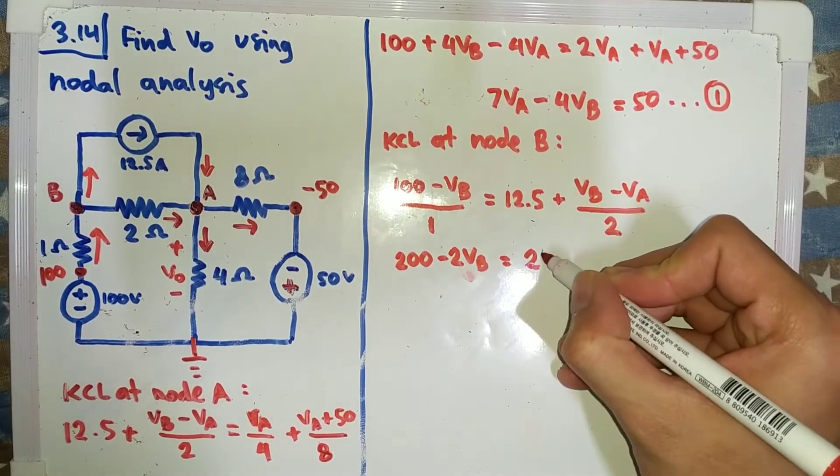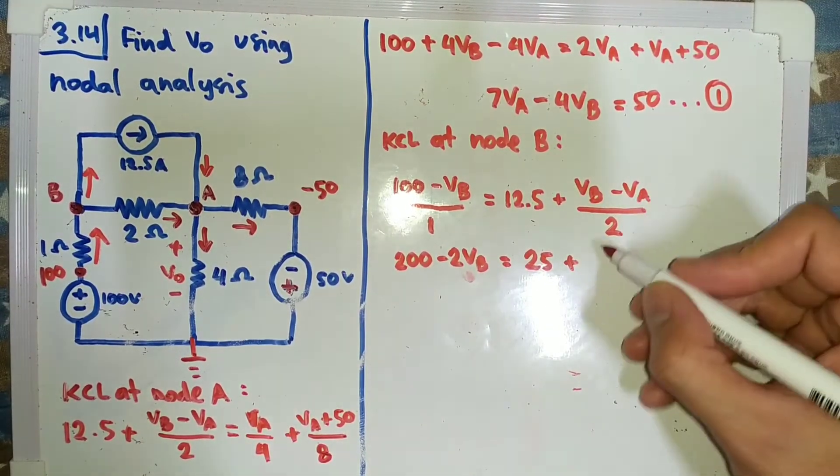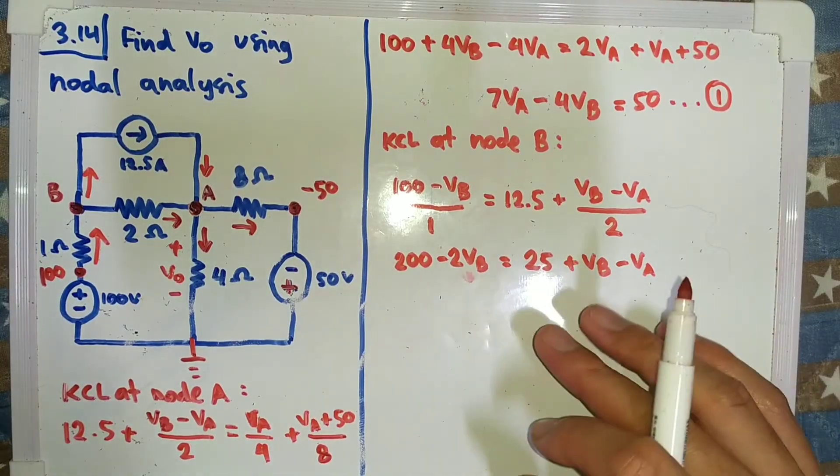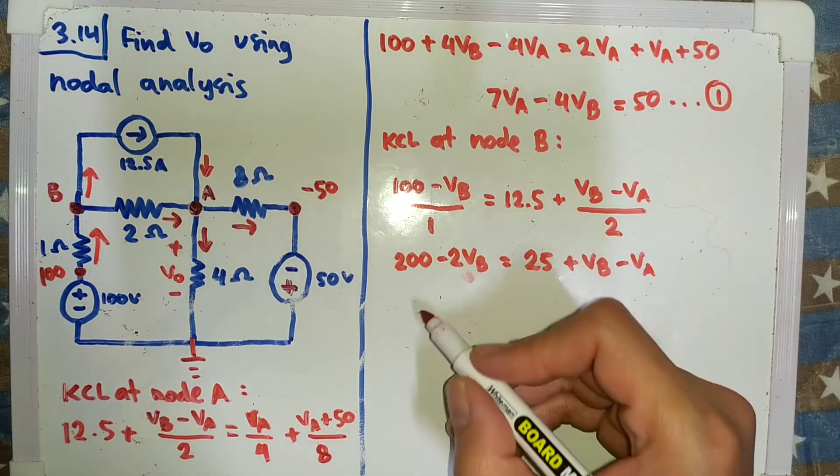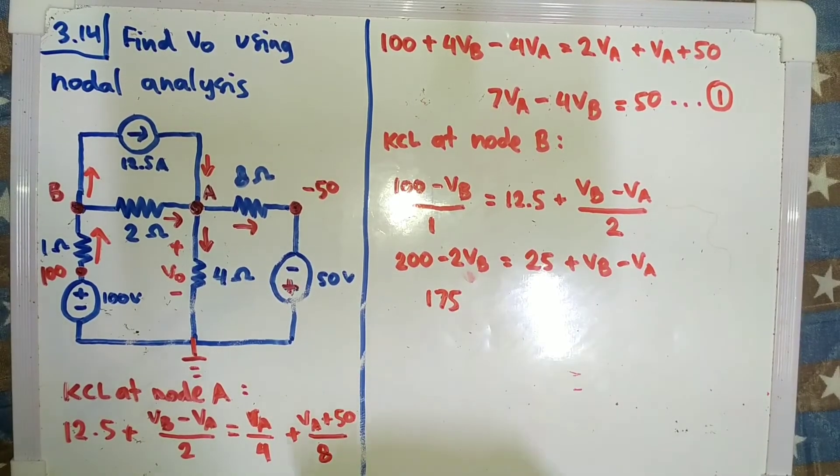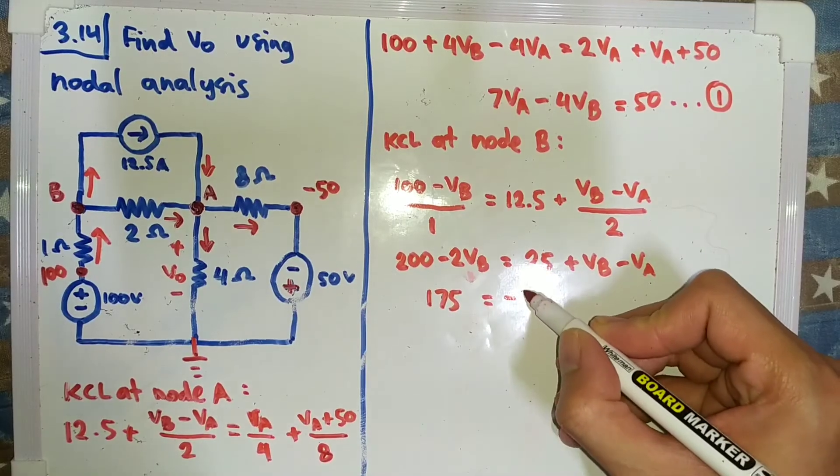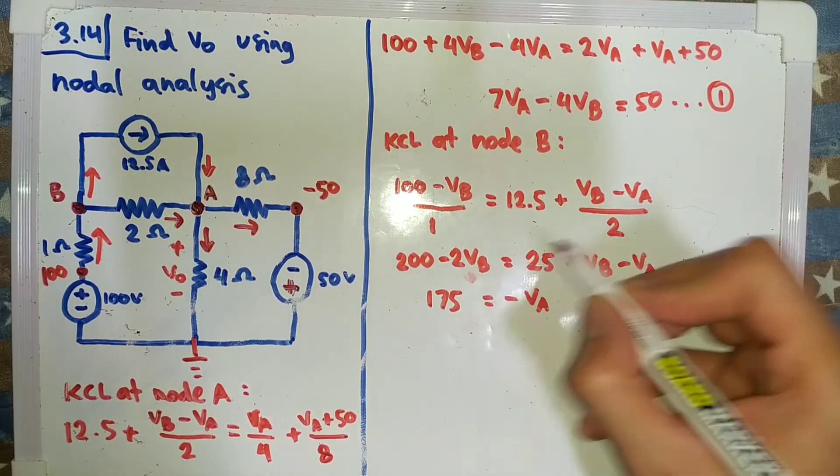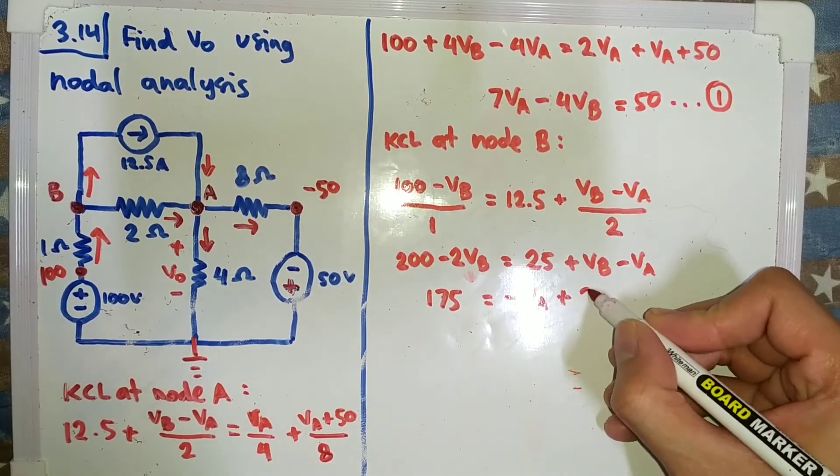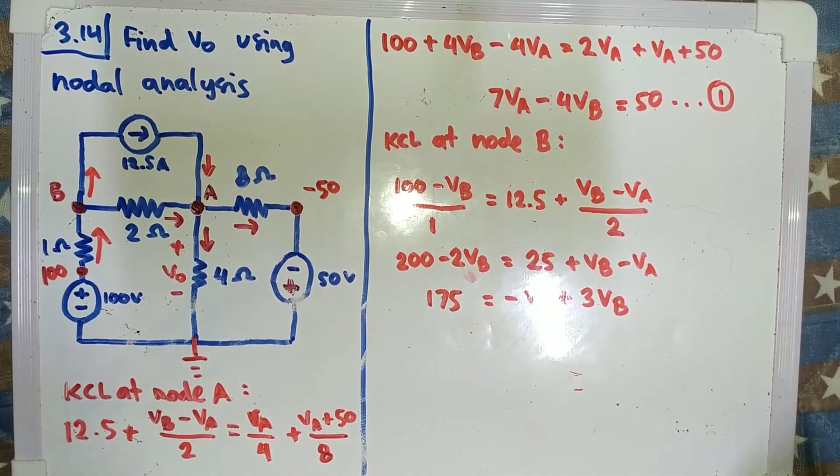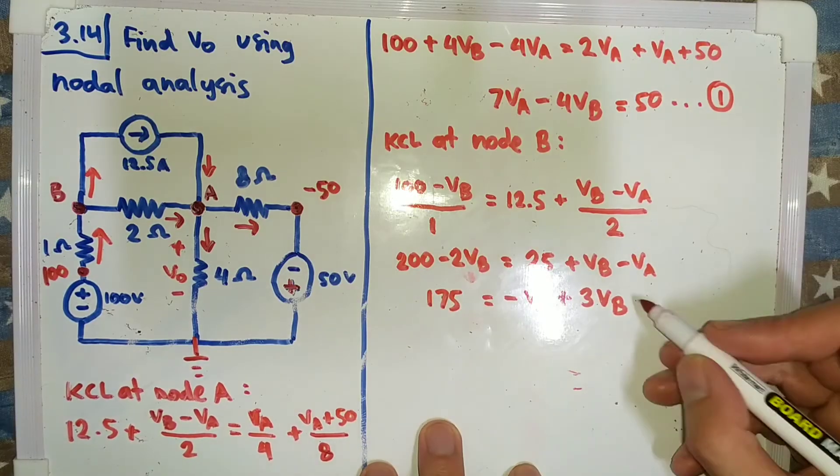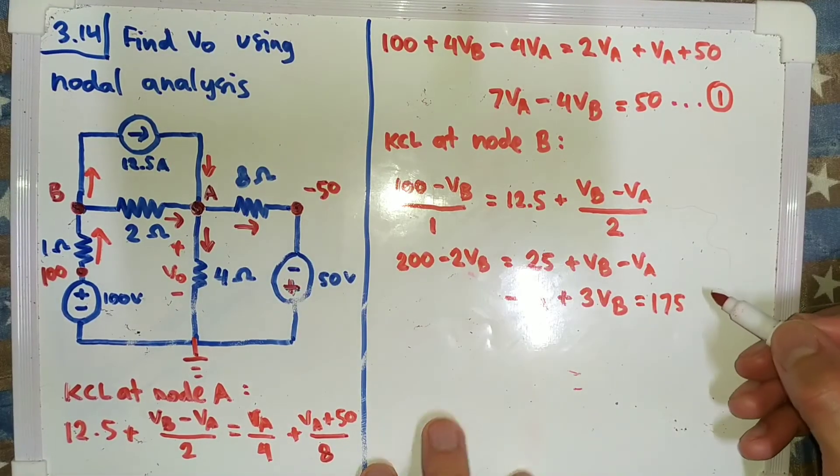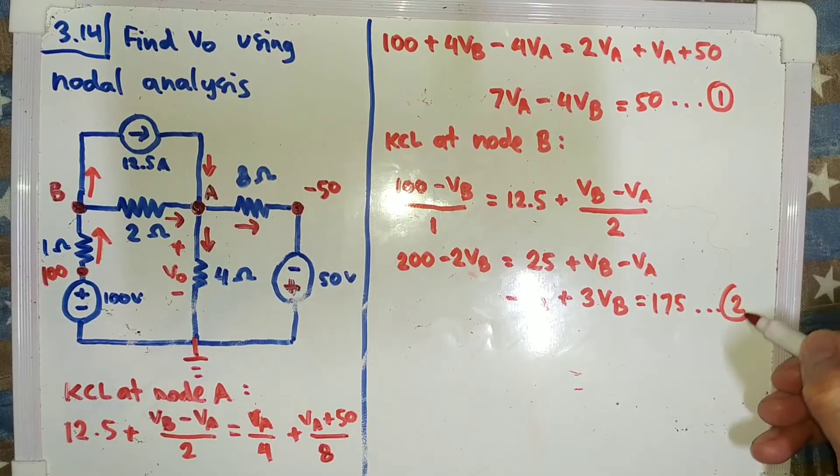Is equal to 25 plus VB minus VA. So we will get this one, I will move this over there and I get 175, and still minus VA. And I will move this minus 2VB to the right side and I will get 3VB. And it is easier when we move this into that and we save this equation as equation number 2.